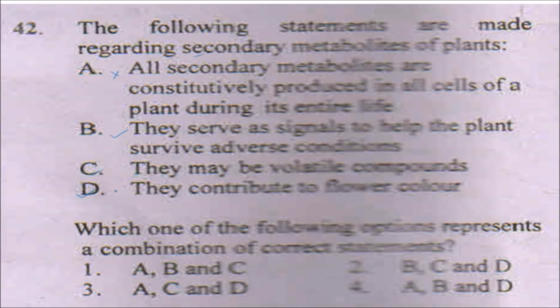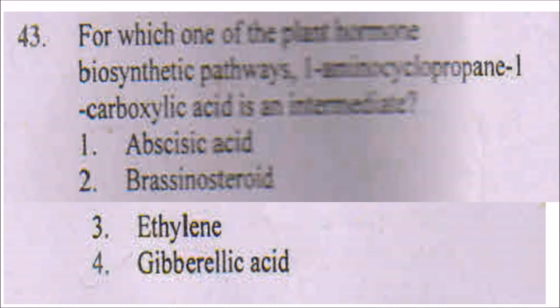The next question asks: for which plant hormone's biosynthetic pathway is 1-aminocyclopropane-1-carboxylic acid (ACC) an intermediate? It is totally based on memory — ACC is an intermediate during ethylene biosynthesis.